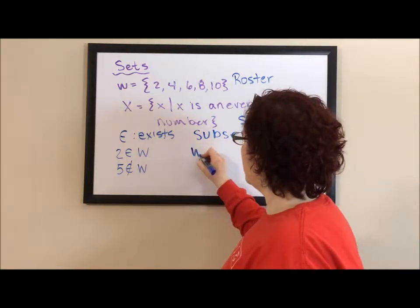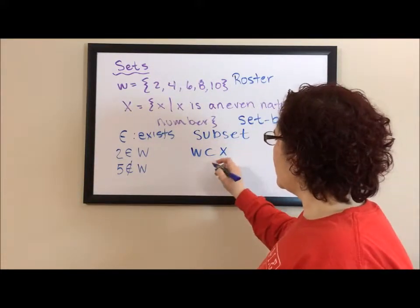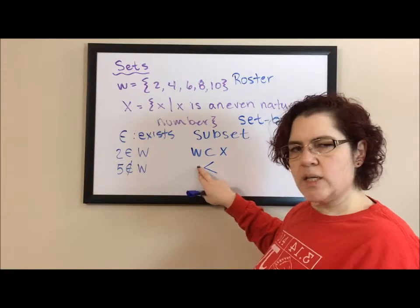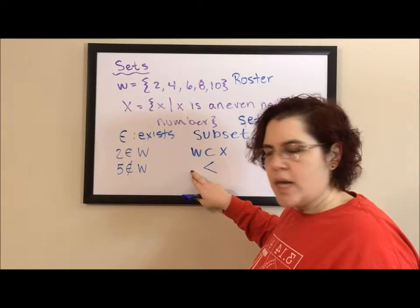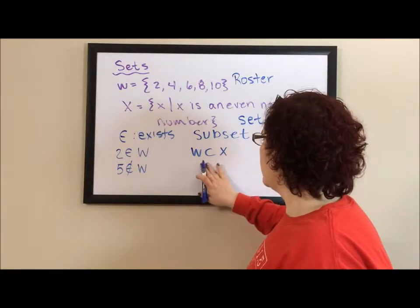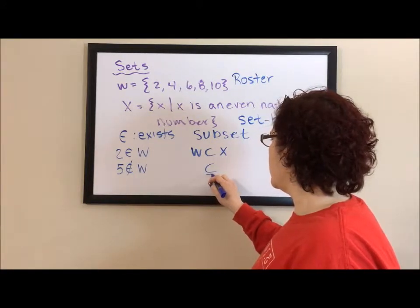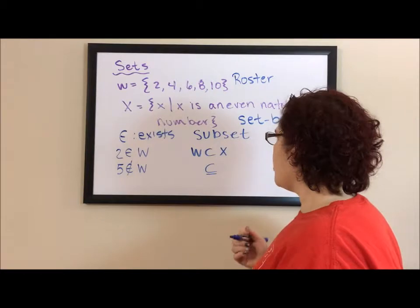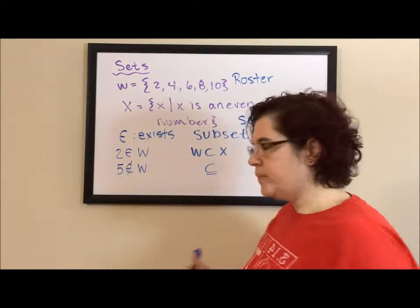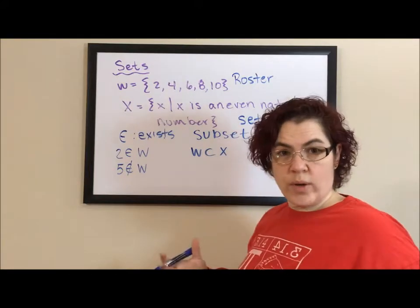Now subset is just a funky sideways U. So I could say W is a subset of X. And just like the greater than, less than sign, the closed side is what is supposed to be the smaller part versus the bigger side. Now there is another symbol, which is the subset with a line underneath, and that's for a proper subset. So W is a proper subset because they're not equal. And we could write it either way, just like greater than or less than.